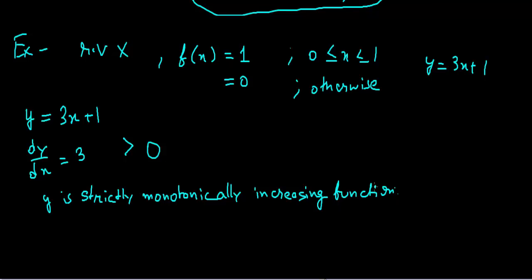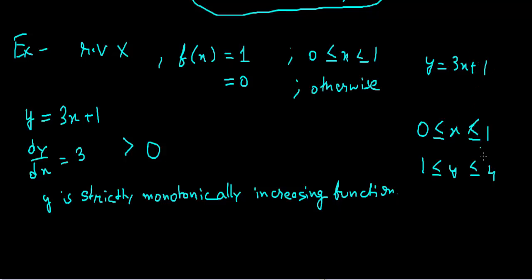Now that we've confirmed this, we also need to change the range. The original range of x was [0, 1]. Putting x equals 0 into y equals 3x plus 1 gives y equals 1, and putting x equals 1 gives y equals 3 plus 1 equals 4. So the new range of y is [1, 4].